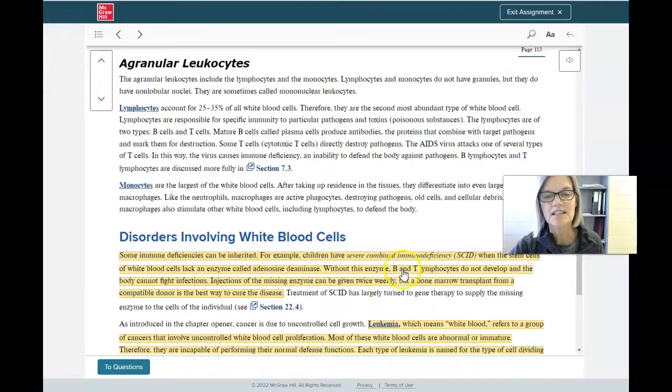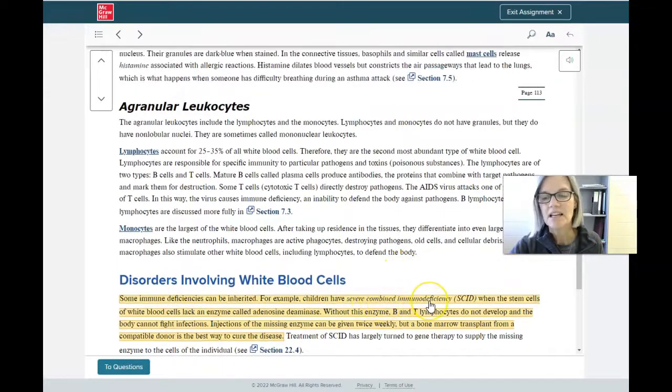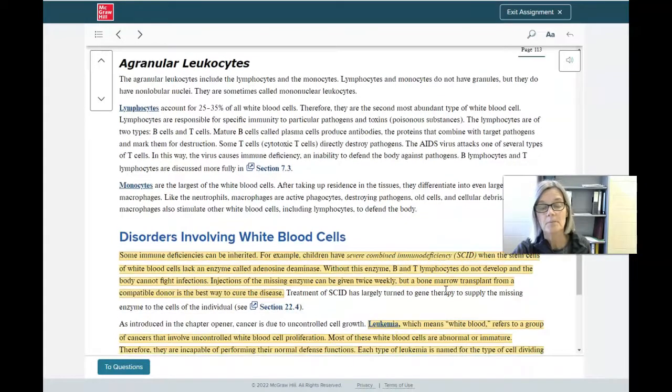Here it's talking about a disease called severe combined immunodeficiency. And this is a disease that is an inherited disease that's a failure of our white blood cells that prevents them from being able to defend the body from pathogens. So it says there's an enzyme that has a problem, and without that enzyme, the body cannot fight infections. So generally what happens is this missing enzyme, they say they give it about twice weekly, but it's not a reliable way to protect that individual.